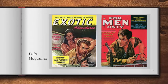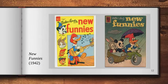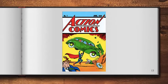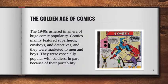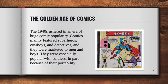Pulp magazines eventually gave way to reprints of newspaper strips like the New Funnies, and they had a huge breakthrough in the form of Action Comics number one — which you might know better as Superman — which came out in 1938. That really kicked off the golden age of comics. They became hugely popular in the early 1940s, mainly featuring superheroes, cowboys, and detectives. They were still mainly marketed to men and boys, and they were especially popular with World War II soldiers because they were so lightweight and portable.